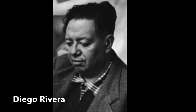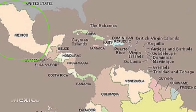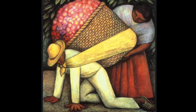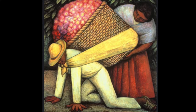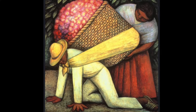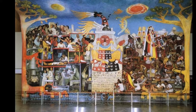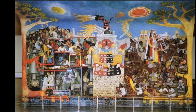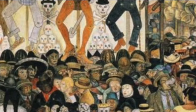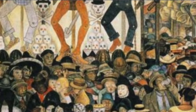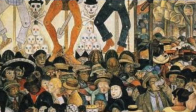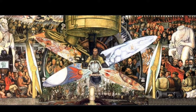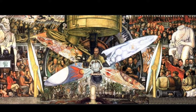Diego Rivera is a social realist and muralist from Mexico. His artwork is about the history and culture of Mexico — one is a depiction of the working class and you can see the struggle. This one is a depiction of the history of medicine in Mexico. This next one is about the holiday Día de los Muertos, or Day of the Dead. And this next one was first called 'Man at a Crossroads' and now it's 'Man, Controller of the Universe.'